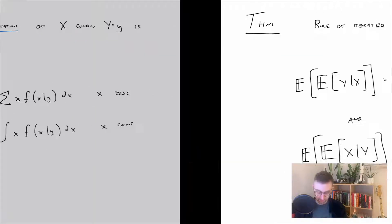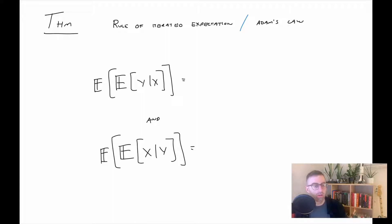So a theorem. This has a few different names: rule of iterated expectation, Adam's law. Essentially, if we take the expected value of the expected value of Y given X, we end up with the expected value of Y. We do that the opposite direction, we get the expected value of X. That might be a little bit confusing and the intuition might not be there, but we're gonna get to an example that'll hopefully help with that.